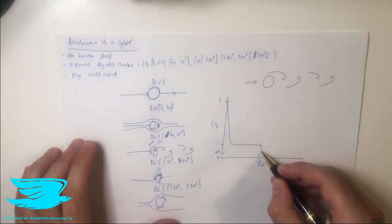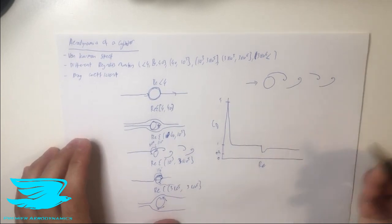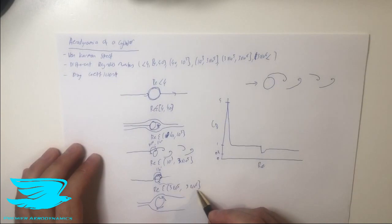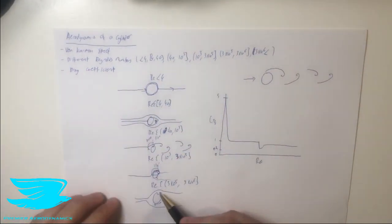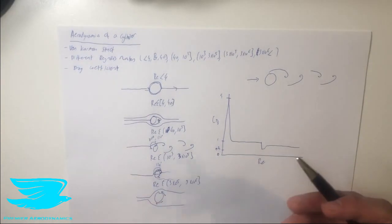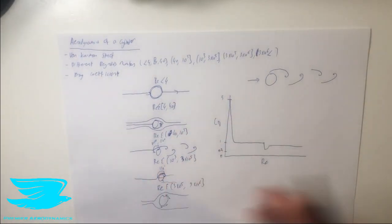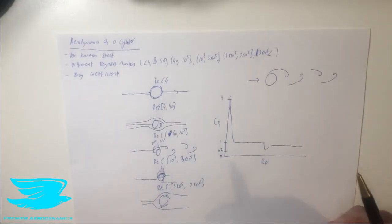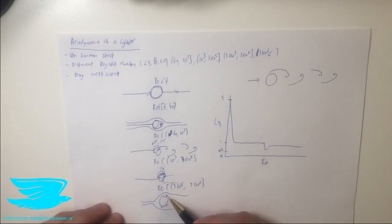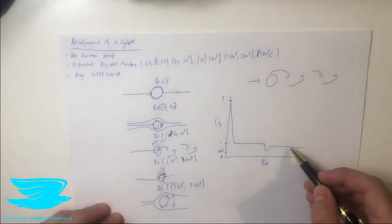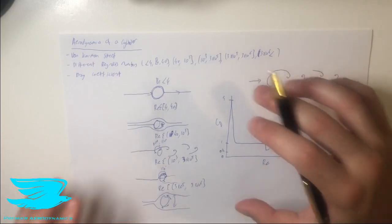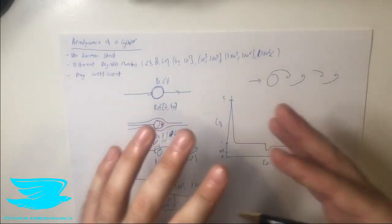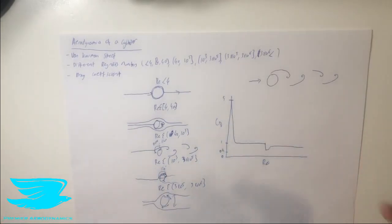As we continue increasing the Reynolds number, the drag coefficient actually starts to rise again and hovers around 0.4 or so. This is because the fluid transitions to turbulence quite quickly, and now the point at which the fluid separates moves further upstream — giving a greater wake size, which increases pressure drag. If you want more detail on the difference between pressure drag, friction drag, profile drag, and vortex drag, check out our separate video on drag coefficient.